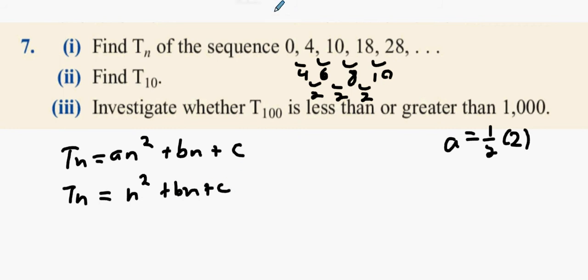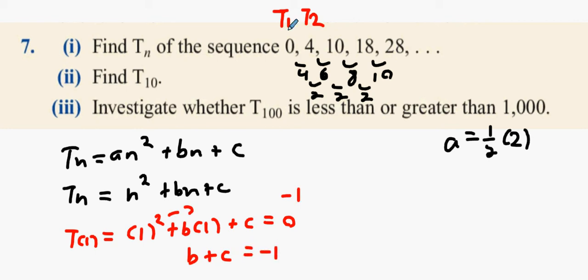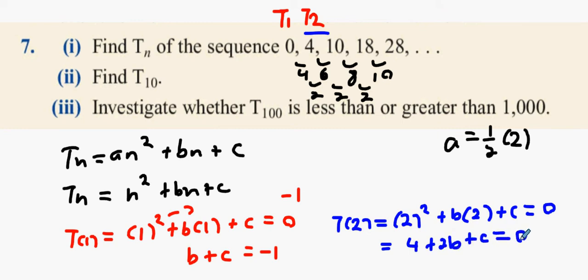What's T1? T1 is 0, and T2 is 4. So what happens when I replace all the Ns with 1s? It will equal 0 for this question only. Then we're going to get B plus C, and what's 1 squared when you move over to the other side? Minus 1. What happens when you replace it with 2s? You're going to get 2 squared plus B times 2 plus C equals 4. Then what do we get? 4 plus 2B plus C equals 4. And then 2B plus C equals 0. Is that all right?